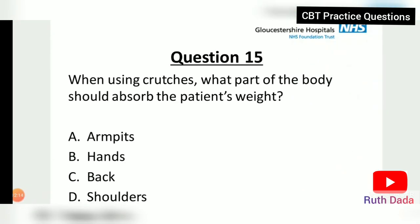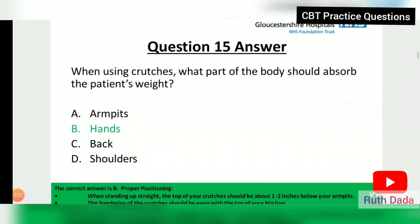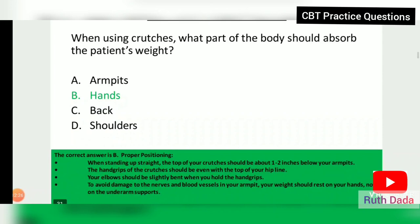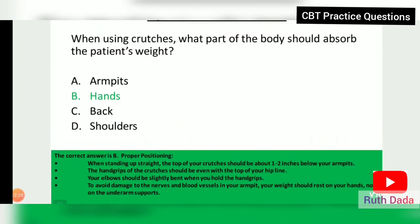Question 15: When using crutches, what part of the body should absorb the patient's weight? The answer is B, the hands. When standing upright, the top of the crutches should be about one to two inches below the armpits, and the hand grips should be even with the top of the hip line.